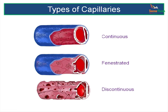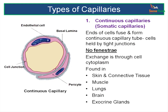The first type is the continuous capillary, also called the somatic capillary. In a cut section you can see two endothelial cells forming the wall, with the nucleus bulging into the lumen, resting on a basal lamina and possibly having a pericyte on the external side. There are no gaps between or within the cells, so whatever has to pass through does so by transcytosis. These capillaries are found in the skin, connective tissues, muscle, lungs, brain, and exocrine glands.